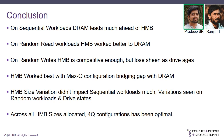In conclusion: on sequential workloads, DRAM leads well ahead of HMB across all drive states and queue configurations. On random read workloads, HMB fares better compared to DRAM. On random writes, HMB is very competitive but loses ground as the drive ages. HMB worked best with maximum queue configuration when bridging the gap with DRAM. Regarding HMB size variation, it did not impact sequential workloads, but across random workloads there were different variations depending on the workload. Across all HMB sizes analyzed, the 4-queue configuration appears to be the most consistent and optimal in terms of HMB usage.